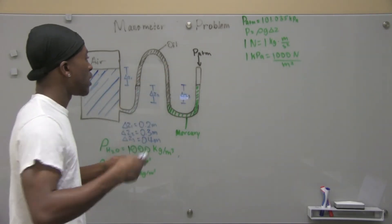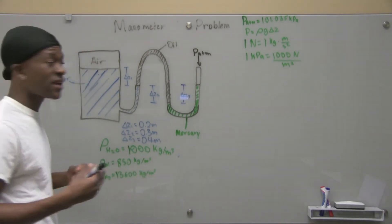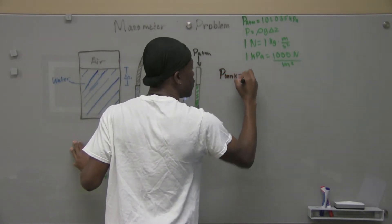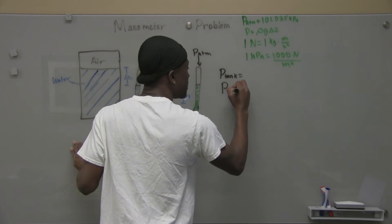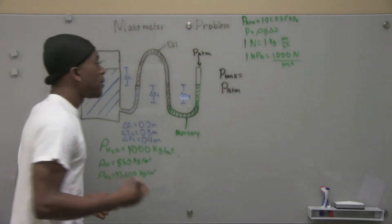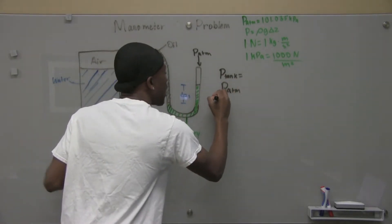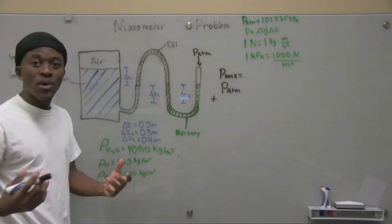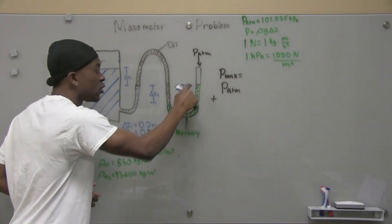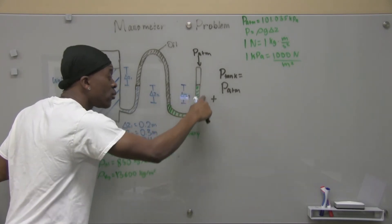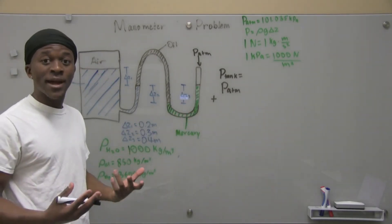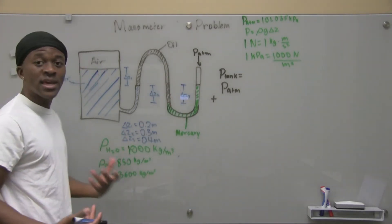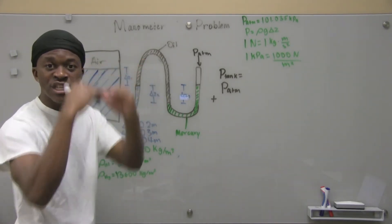So we have our atmospheric pressure and we're trying to calculate the pressure on the air tank. Let me write: P_tank is equal to P_atm — atmospheric pressure. Now from this point to this point, we ended up decreasing from our original altitude. Even though we went down and came back up, the amount we came back up was less than the amount we went down. So it's a total decrease in altitude from here to here.